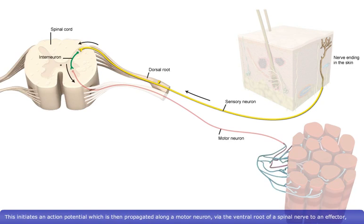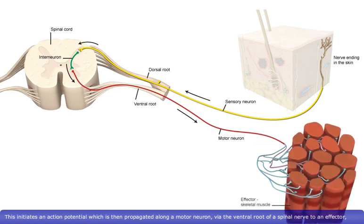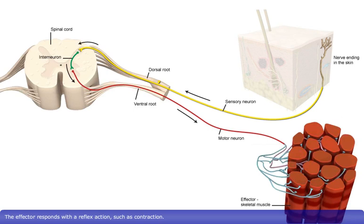This initiates an action potential, which is then propagated along a motor neuron via the ventral root of a spinal nerve to an effector, such as a skeletal muscle. The effector responds with a reflex action, such as contraction.